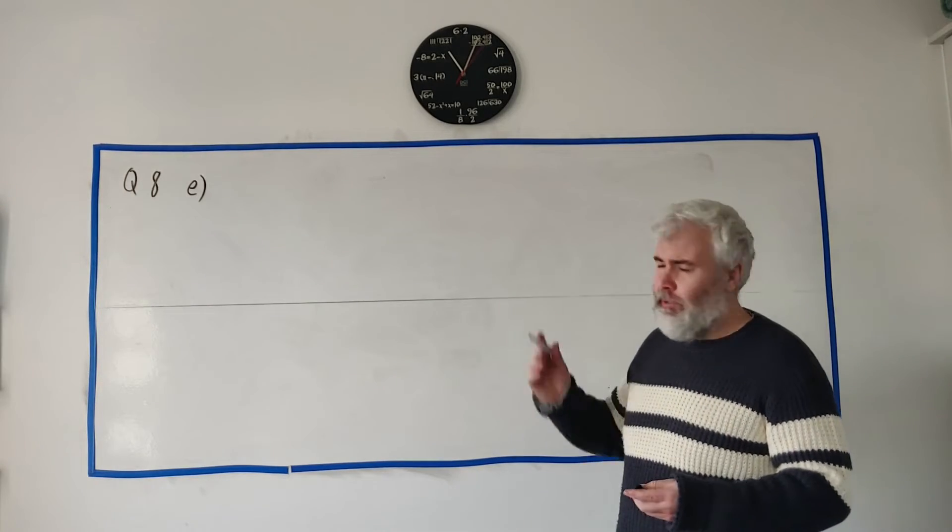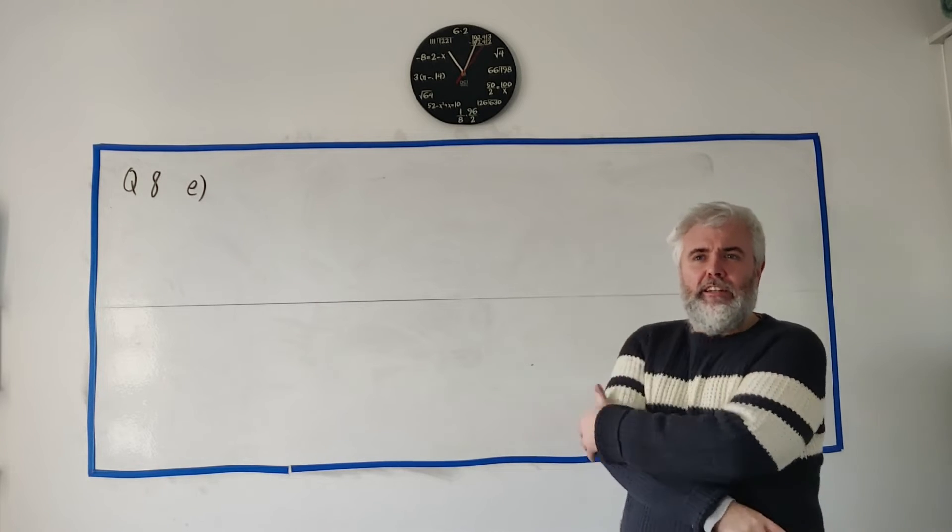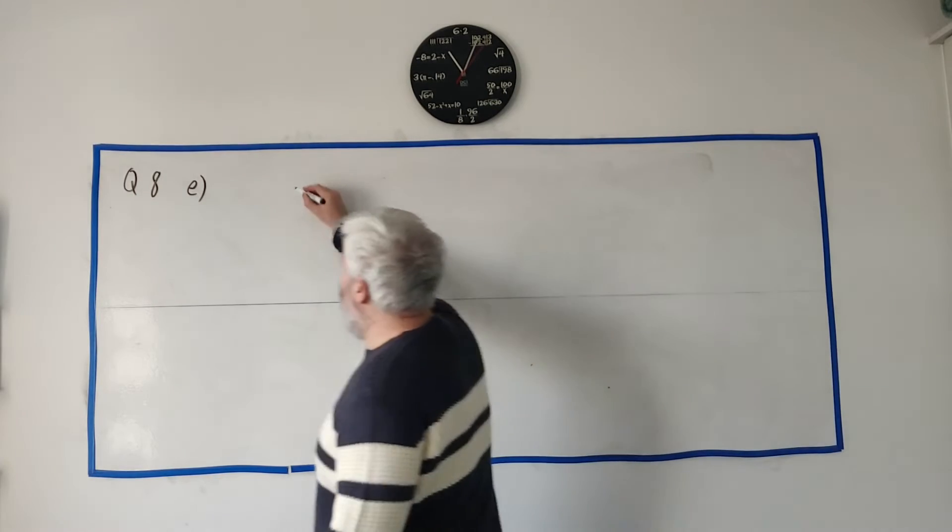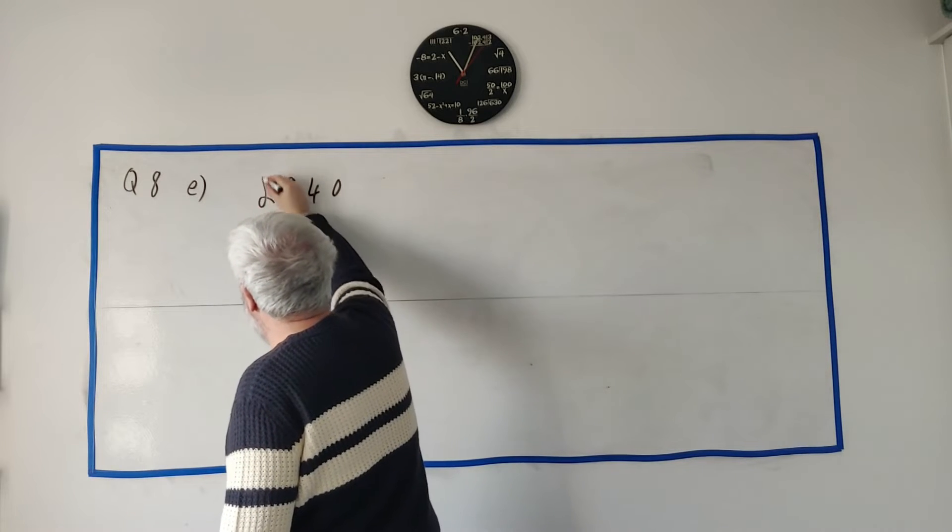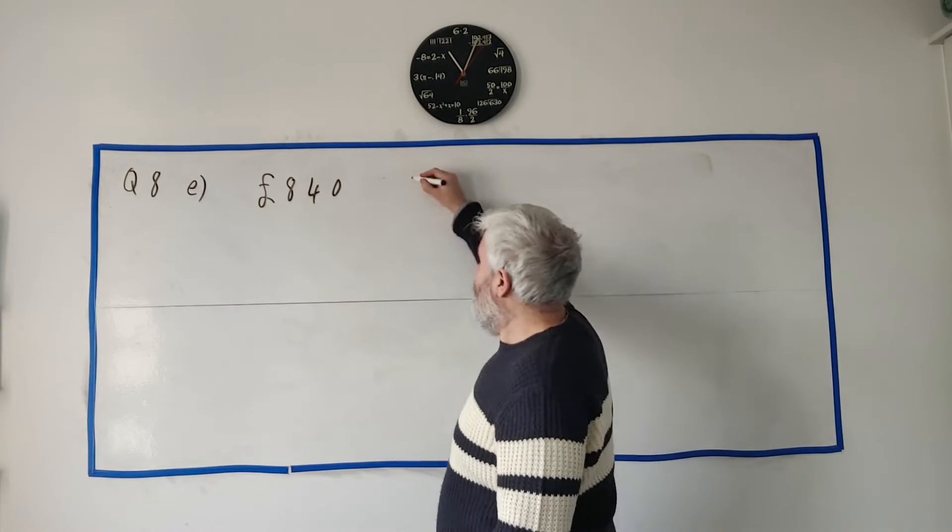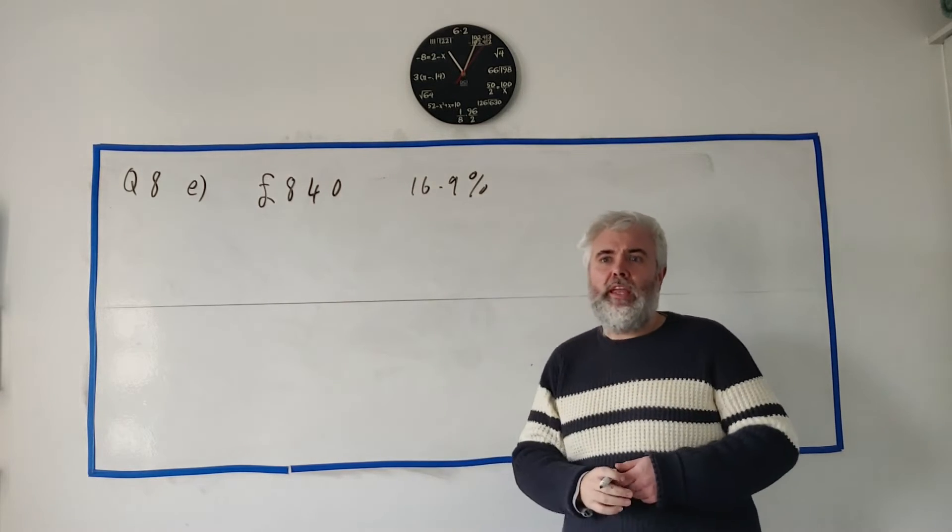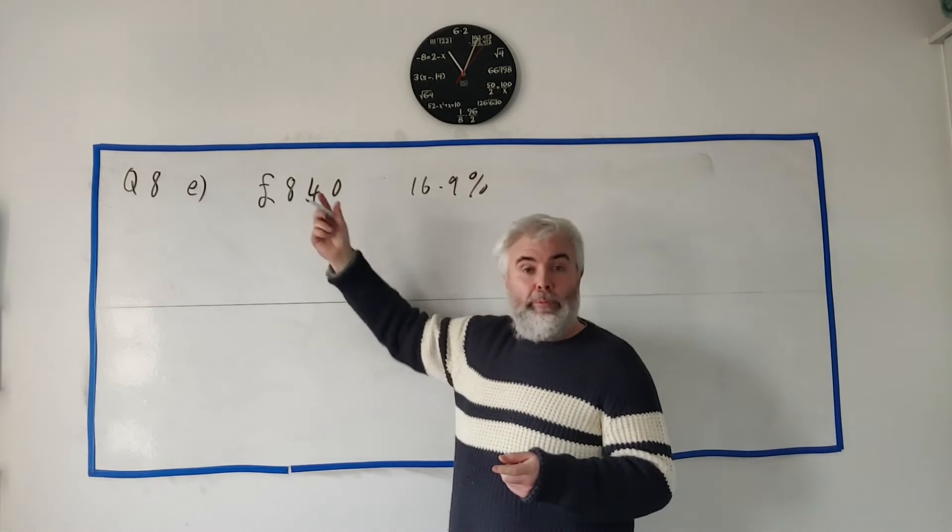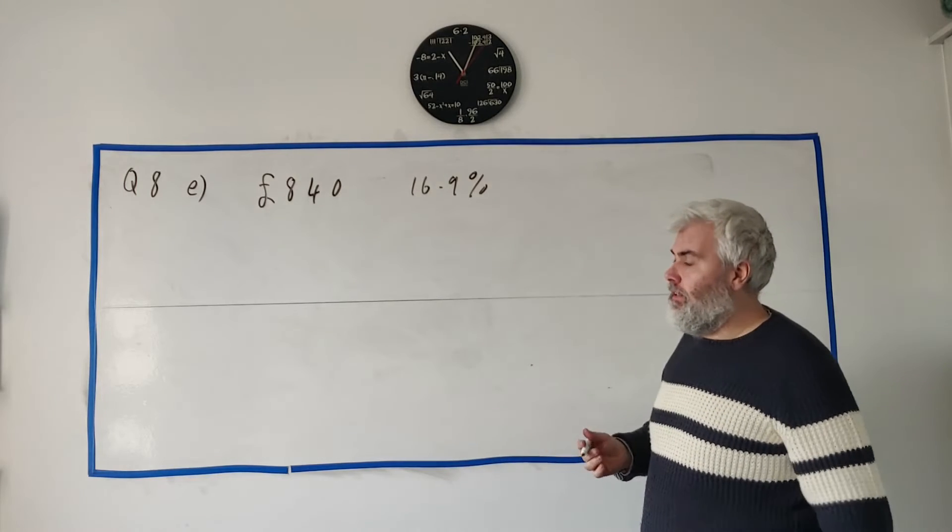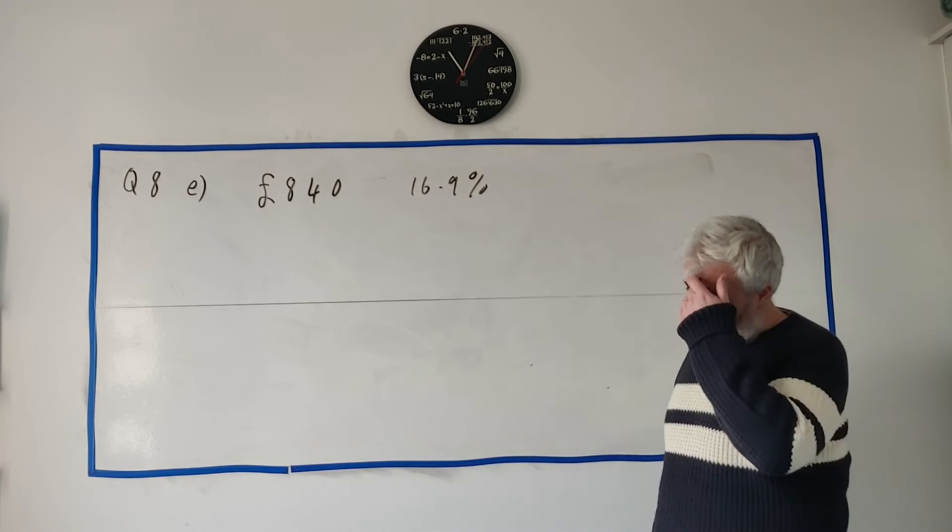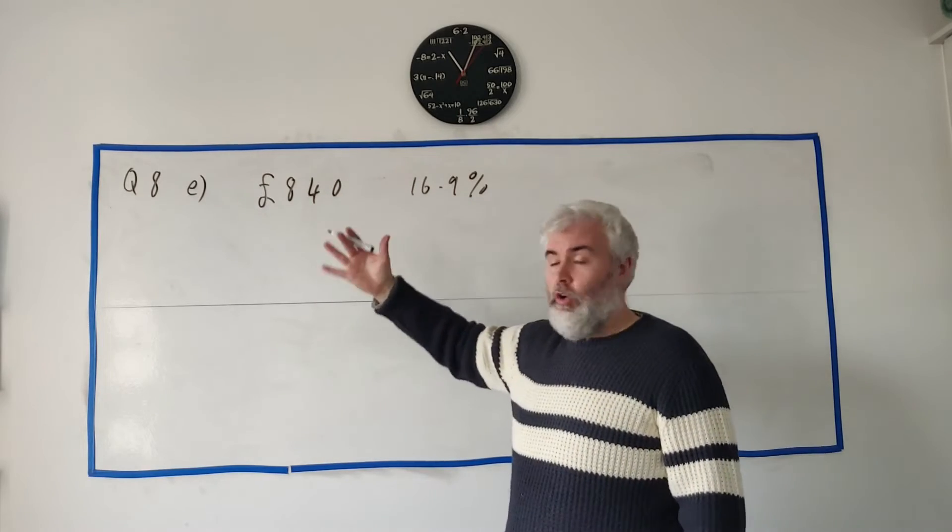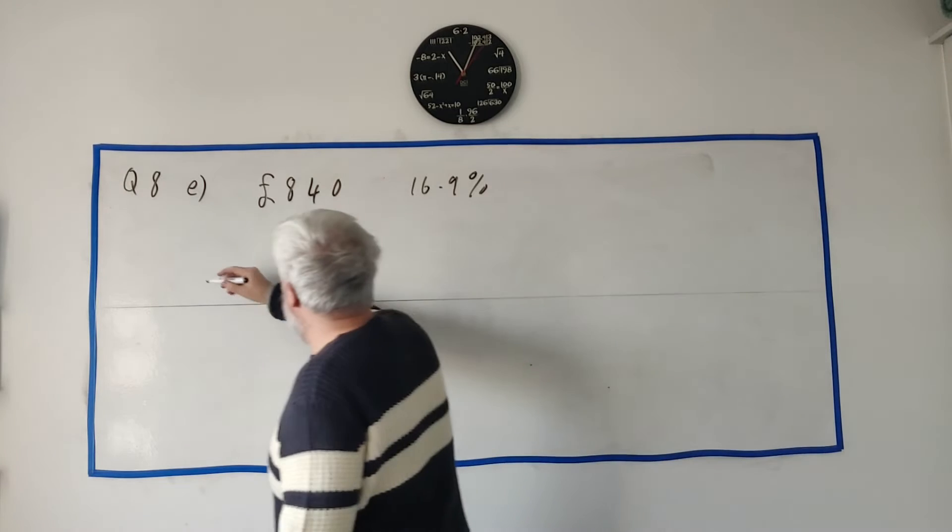Now part E, where they tell us that some materials used for the gardening were imported from England and they cost 840 pounds. It's important - we're not in euro anymore, we're dealing in pounds. This included the import duty of 16.9 percent, and they want us to find out how much the equipment cost before the import duty. Most people will tell you to do this by dividing by 116.9 and multiplying by 100, but I like to do it slowly every time.